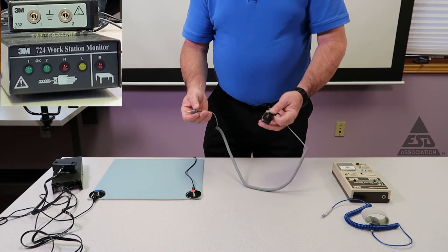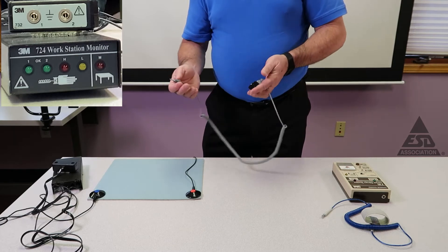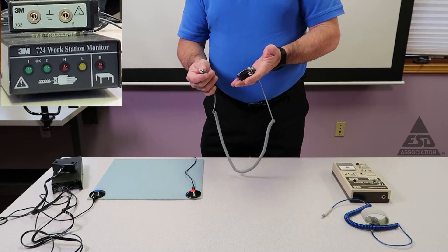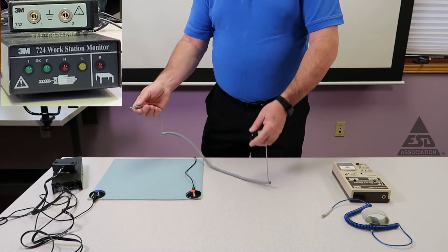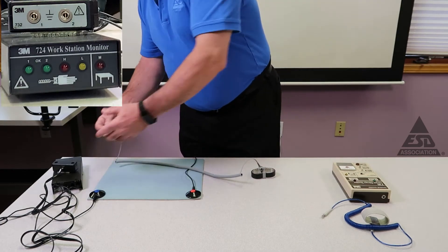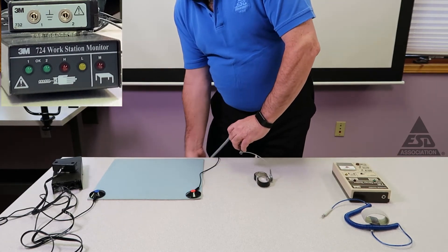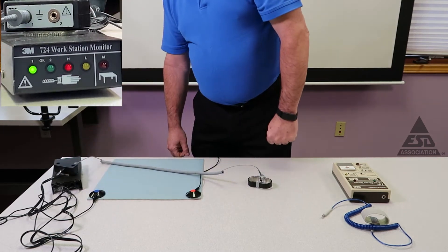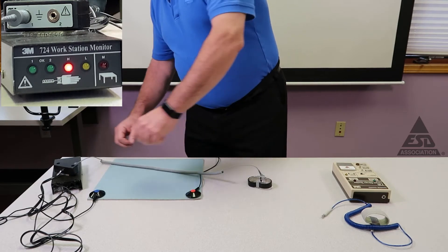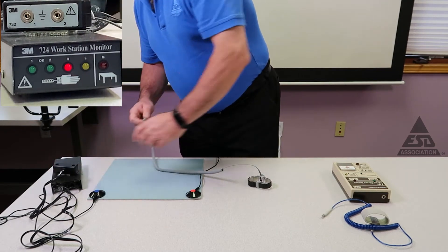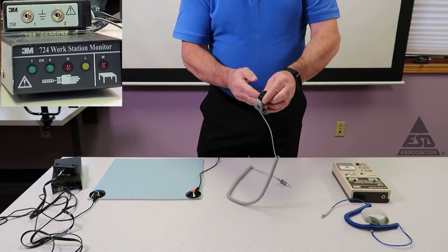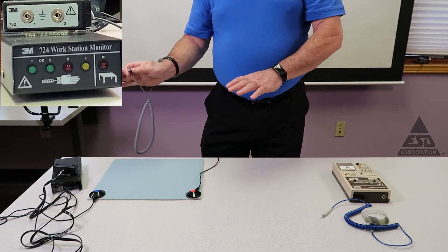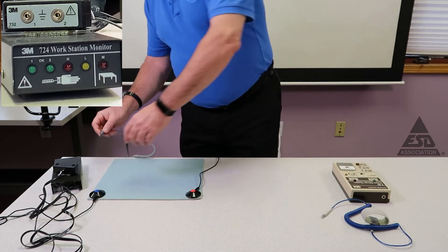Now we're going to do the wrist strap. Instead of testing every day and then walking over to your workstation, this one will test continuously throughout the day. First I'm going to plug it in. I'm not going to be connected and you'll see that alarm telling me there's something wrong, and what's wrong is I'm not in the circuit yet. It didn't see my resistance. Now I'm going to put the wrist strap on and plug it in. If it's working, it should be quiet and the green LED should come on saying that I'm connected.